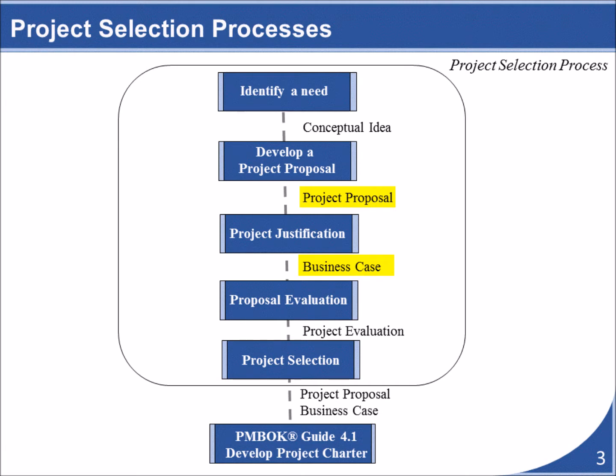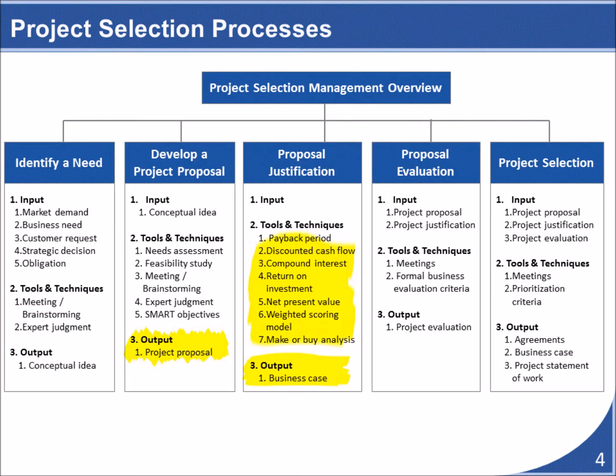The part we are interested in is how do you justify expending time, money, and energy on a project. Project justification is usually done through a business case analysis. A business case looks at the cost benefits of a project to the organization. In this video we will be looking primarily at projects that have a quantifiable financial cost and benefit to the company, to understand how the formulas and models involved in this type of financial analysis work.